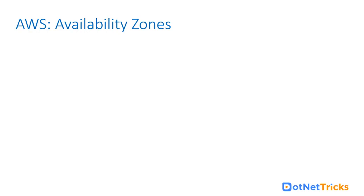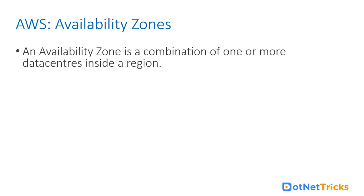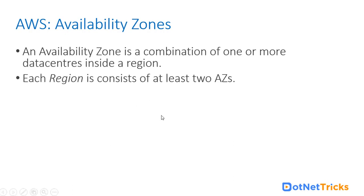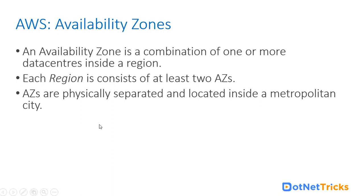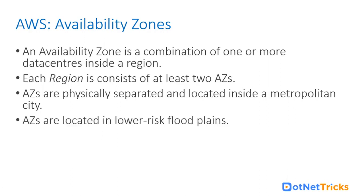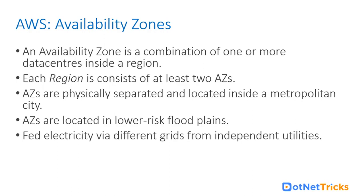An availability zone is a combination of one or more data centers inside a region. Regions are combinations of two or more availability zones. Each region consists of at least two AZs. AZs are physically separated and located inside a metropolitan city — not in remote or barren land, but in city areas, though their exact locations remain anonymous for security reasons. They are located in lower-risk flood plains, selected through proper research on critical parameters.